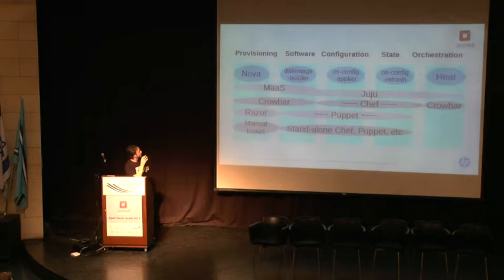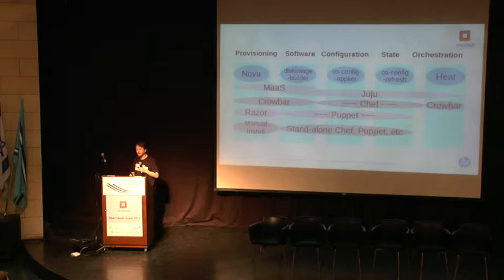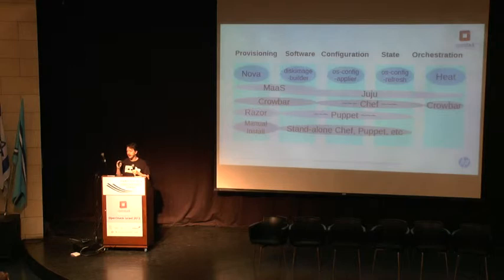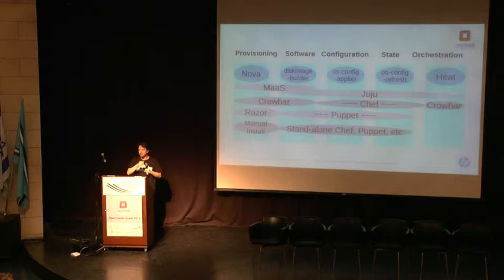This breaks down into a few different concerns. You've got provisioning of servers, software that needs to go on the servers, configuration of that software, state management tasks around that configuration, and finally most things run on multiple servers with cross-server dependencies — which apt and RPM package graphs don't handle at all, because they're single-machine-aware. You need a larger view: I need a MySQL server, a WordPress server, and a load balancer on top of two WordPress servers. There are dependencies between these — that's the orchestration layer.